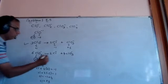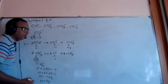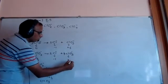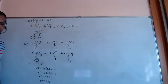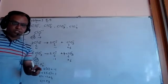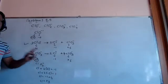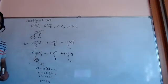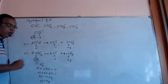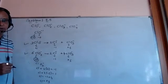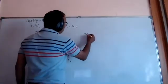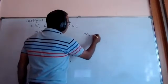In the products, Cl⁻ has oxidation state minus one, and ClO₃⁻ has chlorine at plus five. So from plus three to minus one is reduction, and from plus three to plus five is oxidation. Therefore, ClO₂⁻ also undergoes disproportionation reaction.